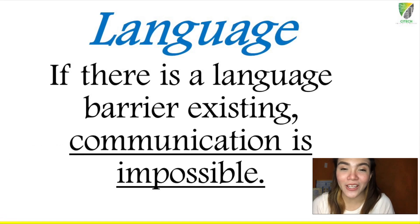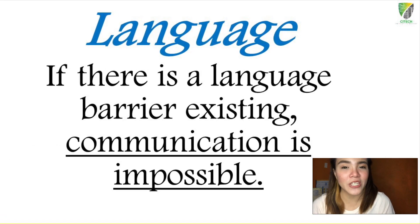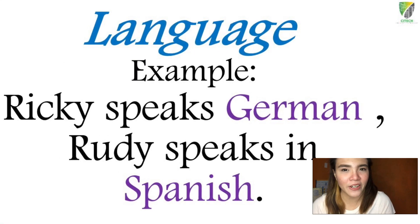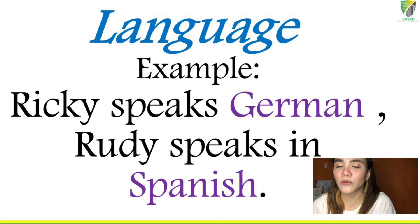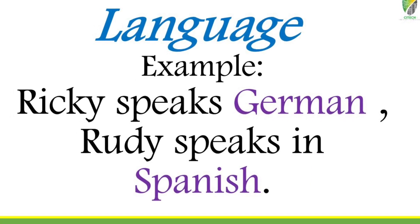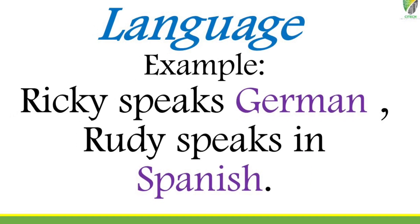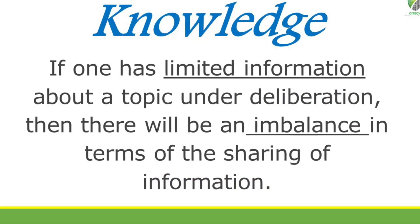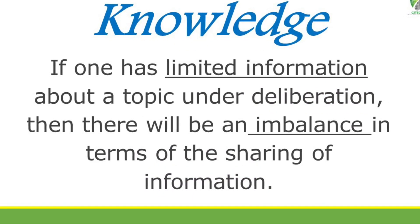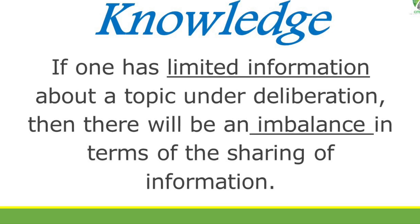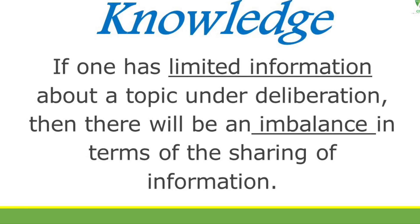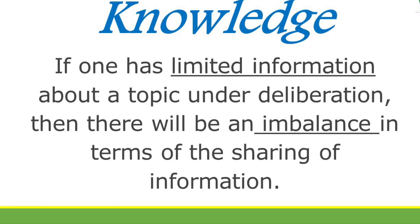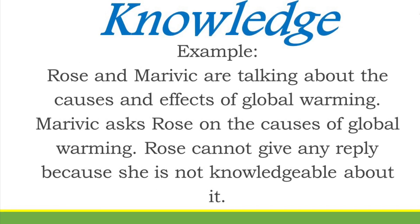There should be at least one similar language among the people communicating. If not, there will be a barrier, and communication will not transpire — just like in the example where Ricky speaks German and Rudy speaks Spanish. Next is knowledge. Knowledge regarding a certain topic or idea can cause either communication or miscommunication.